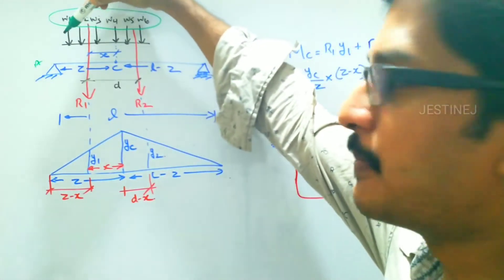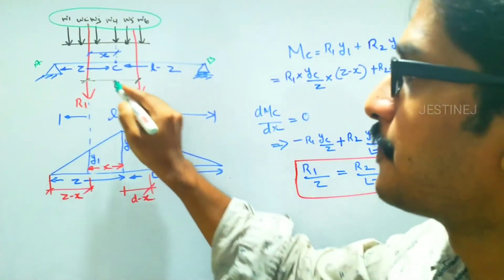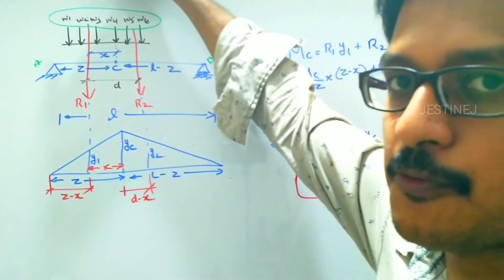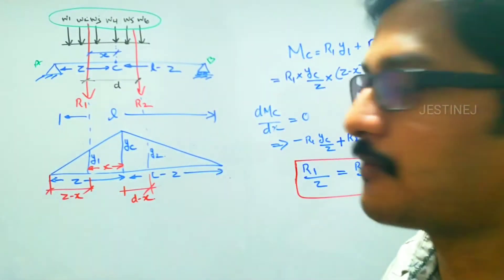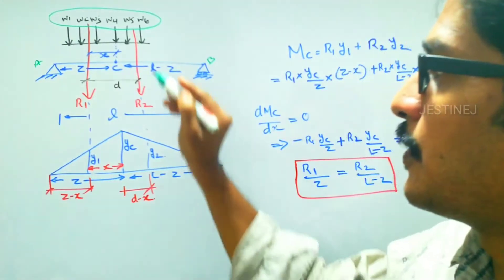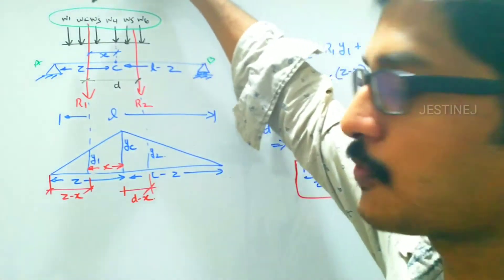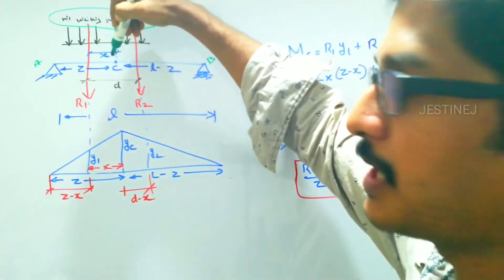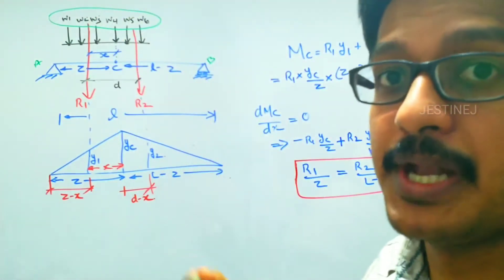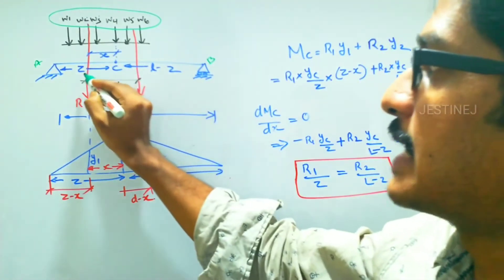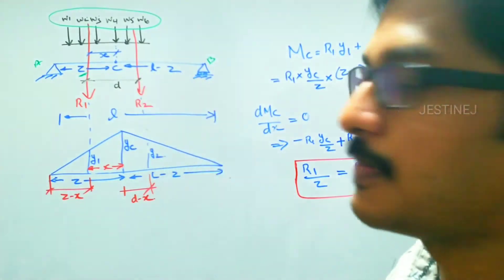Let us consider a simply supported beam with supports A and B and the span is small l. There is a series of concentrated loads traveling across the beam — in this case we consider six loads traveling. We have to find out which of these six loads, when acting at an intermediate point C, will give the maximum bending moment. We will consider the distance A to C as z and the remaining distance as l minus z.